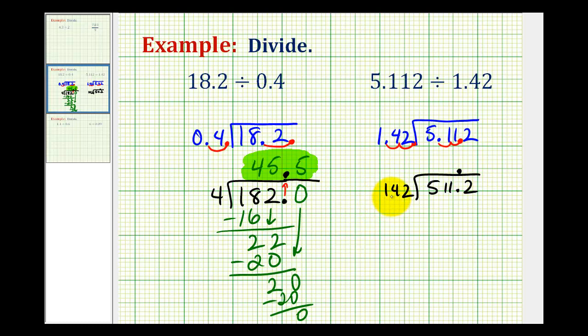So we want to determine how many 142's are in 511. Not an easy question. I think it's going to be 3. So 3 times 2 is 6. 3 times 4 is 12. Carry the 1. 3 times 1 plus 1. That's going to be 426.